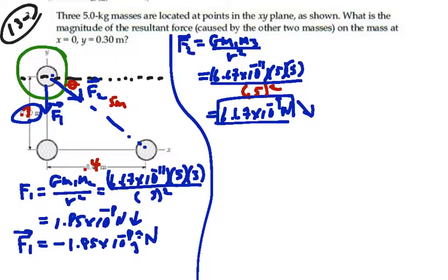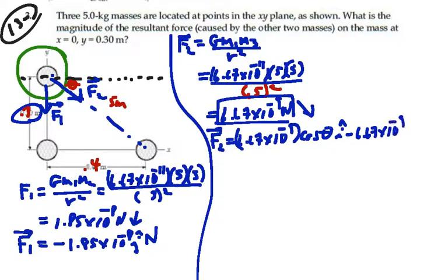Hence, if I were to write F2 in terms of a vector, I would say that F2 is equal to, as a vector, 6.67 times 10 to the minus 9 cosine theta i minus 6.67 times 10 to the minus 9 sine theta j.